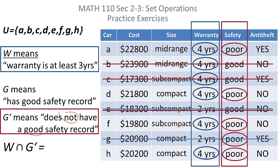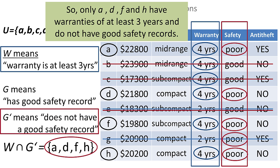I'm looking for things that have at least a three year warranty — and remember, intersection means 'and' — and do not have a good safety record. What I haven't marked out is the final result. That would be car A, car D, car F, and car H. And that is the intersection they wanted us to find.